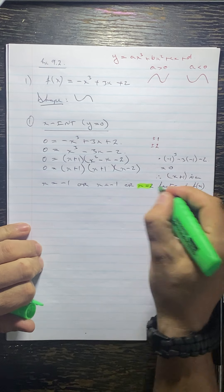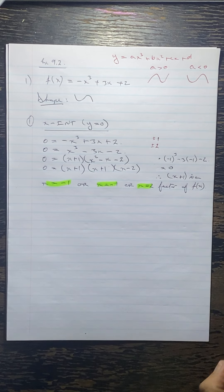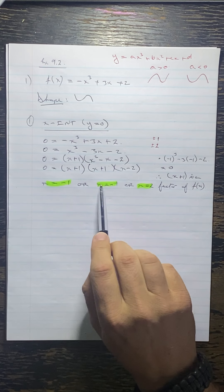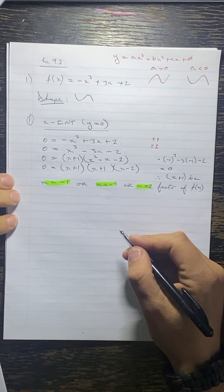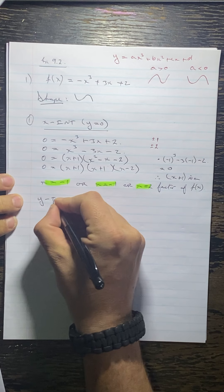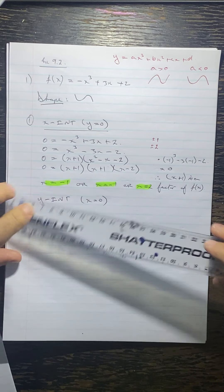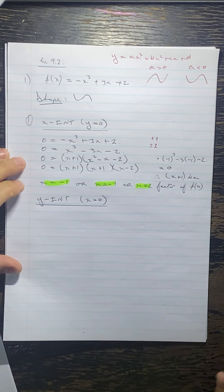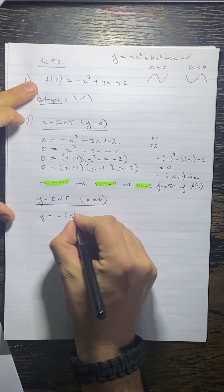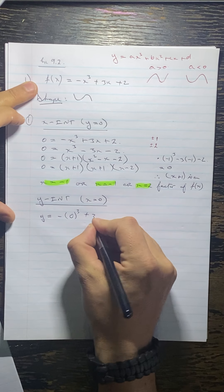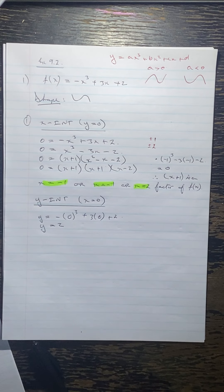Those are our x-intercepts. I want to point out that because we're getting these equal x-intercepts — in other words, equal roots — I know that this is going to be a turning point, and we'll talk about that in a second. The next intercept I'm going to find is the y-intercept, and we make x equal to 0. So from the original, y equals minus 0 cubed plus 3 times 0 plus 2, so y equals 2 as our y-intercept.